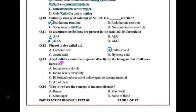Alkyl iodide cannot be prepared directly by halogenation of an alkane because iodine reacts slowly and reversibly. The HI formed reduces the alkyl iodide back to the starting material. So all of these is the correct choice.